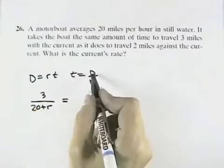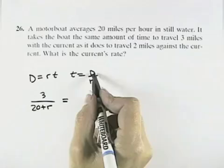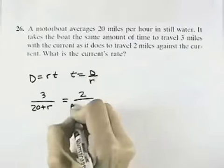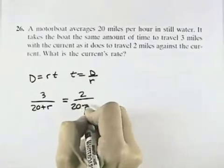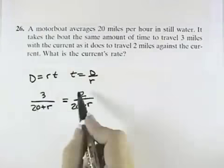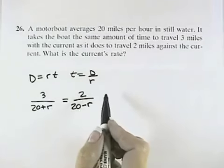And that time should be the same as the distance the second time, which is 2 miles over the rate, which is 20 miles per hour, minus the current because that time you're going against the current. So if we solve this for R, that should give us the rate of the current.